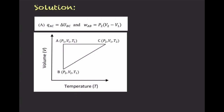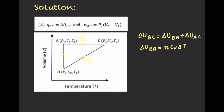We start with change in internal energy because internal energy is a state variable. We are moving from B to C. Since internal energy is a state variable, I can move from B to C via path 1, or I can move from B to A and then A to C as path 2. The change in internal energy in path B to C equals change in internal energy in path B to A plus change in internal energy in path A to C. Since B to A is an isothermal process, ΔT equals 0, so change in internal energy in path B to A equals 0.